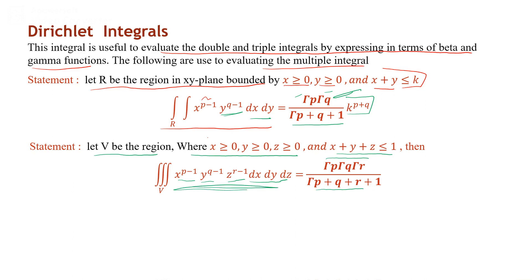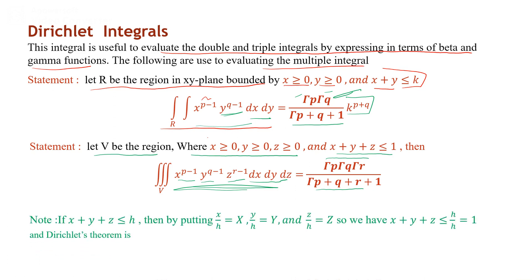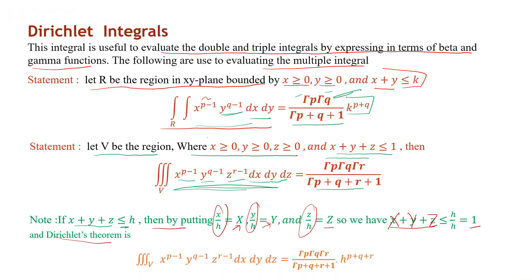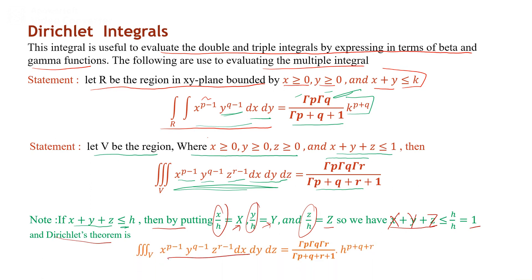An important point: if x + y + z is less than k, we substitute X = x/k, Y = y/k, Z = z/k, so that X + Y + Z is less than or equal to 1. By the Dirichlet theorem, we then multiply the result by k^(p + q + r).